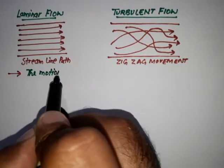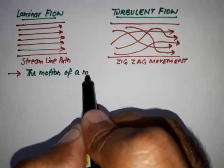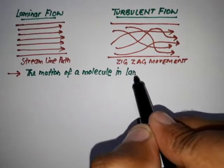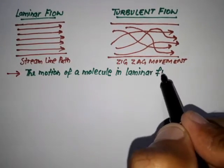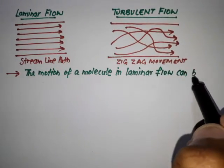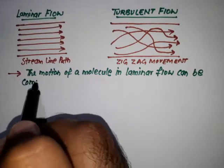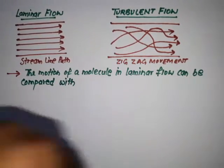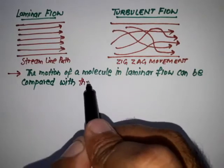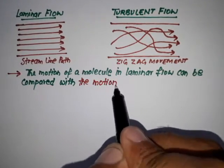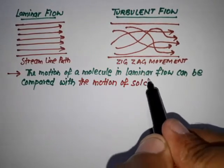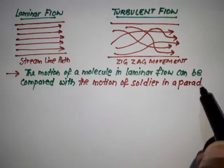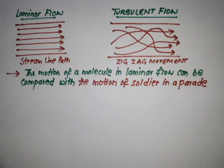of a molecule in laminar flow can be compared with the motion of a soldier in a parade. And the motion of the molecule